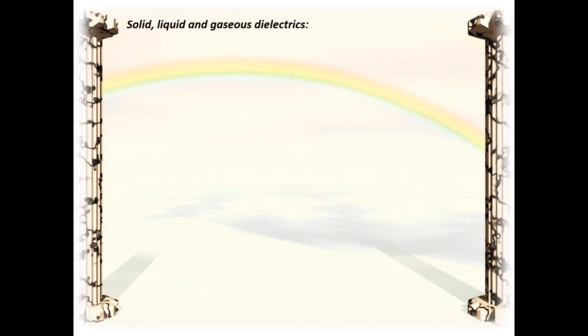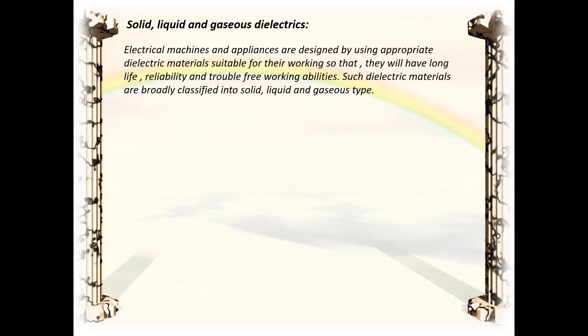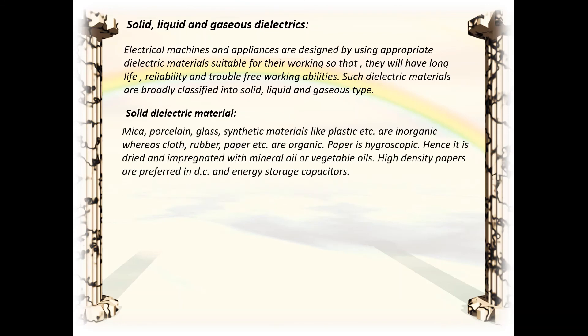Dielectric materials used in electrical machines are broadly classified into solid, liquid, and gaseous types. Solid dielectric materials include inorganic materials such as mica, porcelain, glass, and synthetic materials like plastics, as well as organic materials like rubber and paper. Paper is hygroscopic and hence is dried and impregnated with mineral oil or vegetable oils. High density papers are preferred in DC and energy storage capacitors.